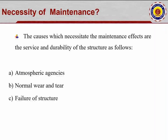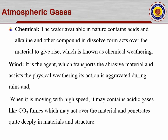The necessity of maintenance: the causes that necessitate maintenance affect the service and durability of the structure. These include atmospheric gases, normal wear and tear, and failure of a structure through physical and chemical effects. Water available in nature contains acids, alkalis, and other dissolved compounds that act on materials, causing chemical weathering. Wind transports abrasive material and assists physical weathering; its effect is aggravated during rains, and when moving at high speed it may carry acidic gases like CO2, which penetrate deeply into materials and structures.